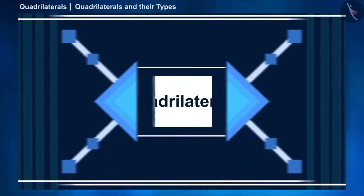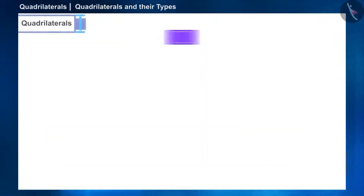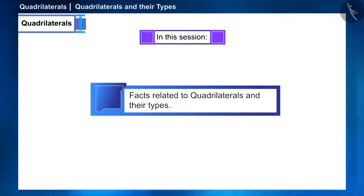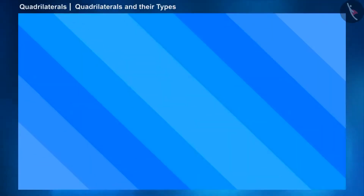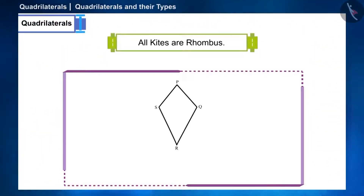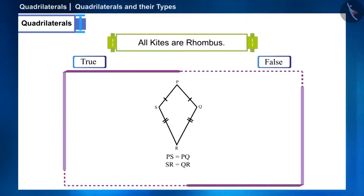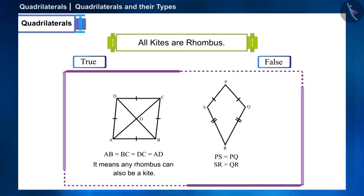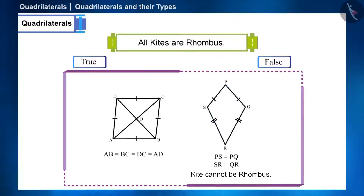Hello friends, welcome to this session on quadrilaterals. In the previous session we learned about quadrilaterals and their types. Today we will discuss some facts related to the same. Let's start with our first question: all kites are rhombus — is this statement true or false? Kites have two pairs of different adjacent sides whose lengths are equal, whereas all sides of a rhombus are equal. Any rhombus can also be a kite, but in a kite the two pairs of different adjacent sides are equal and the opposite sides are not equal; therefore the kite is not a rhombus. The given statement is false.